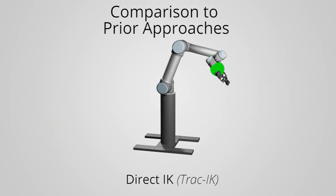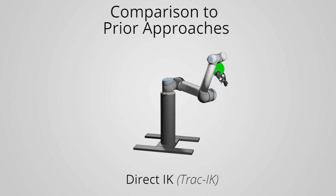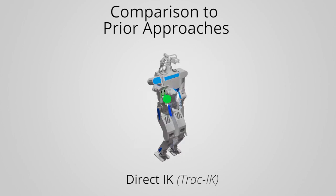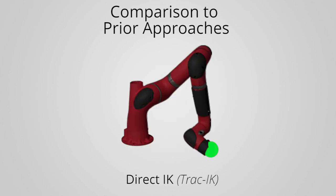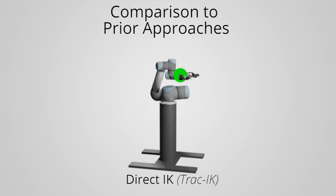For example, when directly using an inverse kinematic solver at each update, like Track IK seen here, the solver exhibits infeasible motion qualities such as self-collisions, kinematic singularities, and joint space discontinuities.